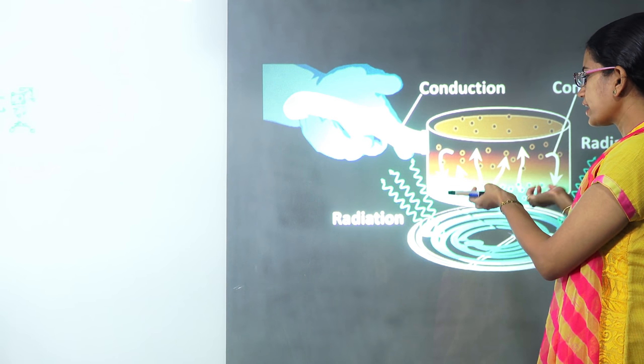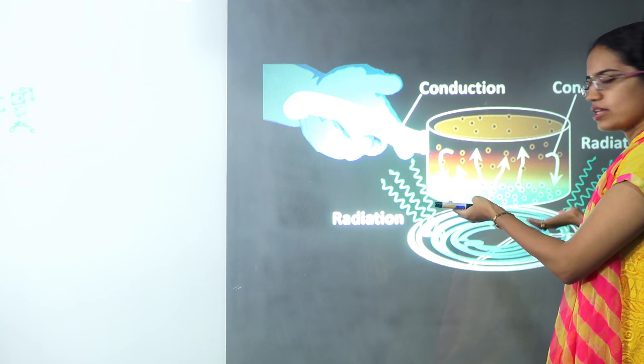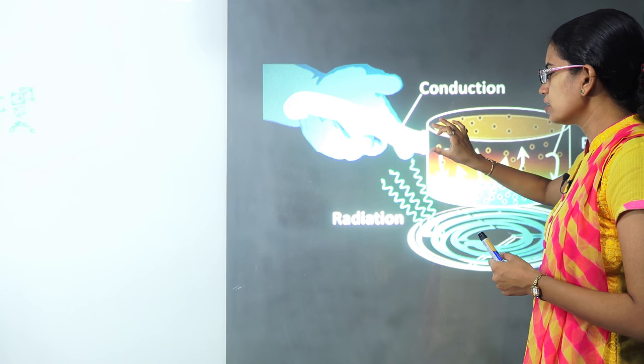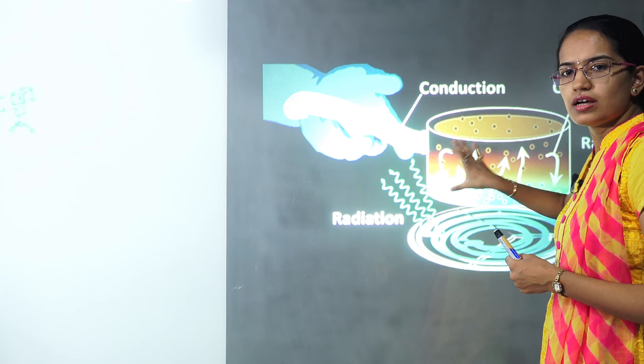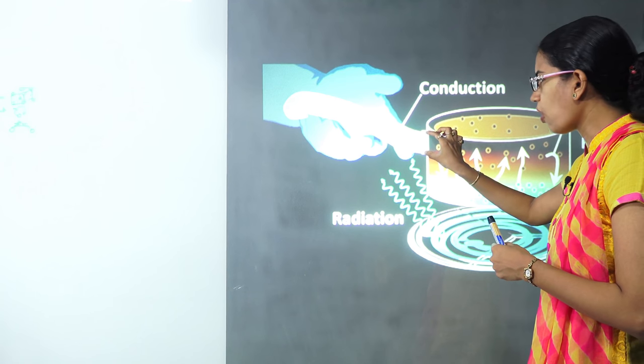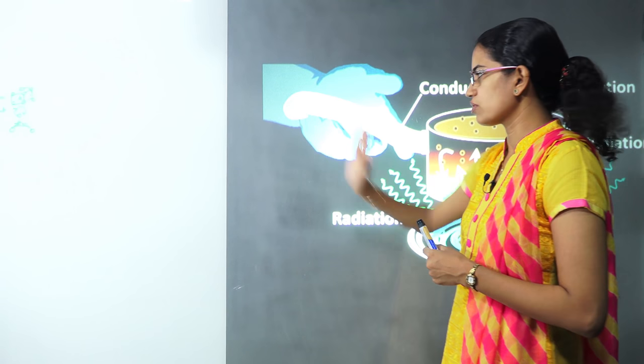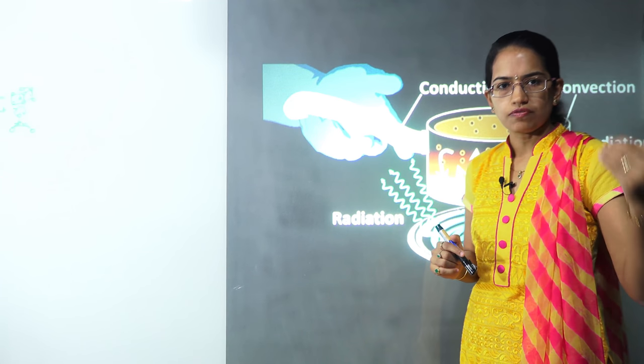When you are boiling water in a pan, what happens is the handle on the closest part of the pan would get hot, and that heat would be transferred to the outermost region of the handle. That is the process of conduction.